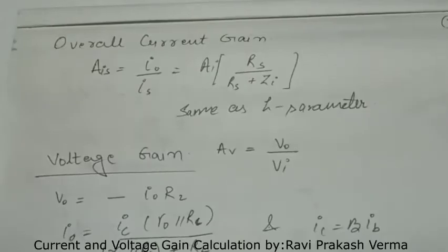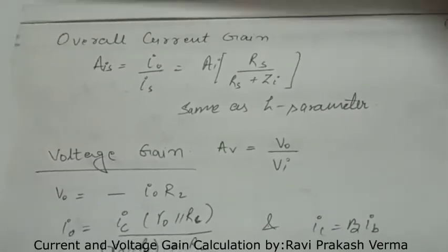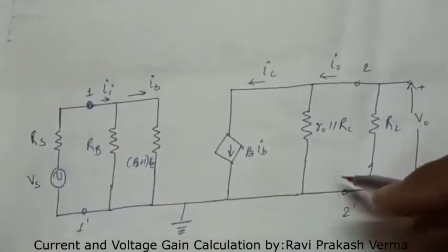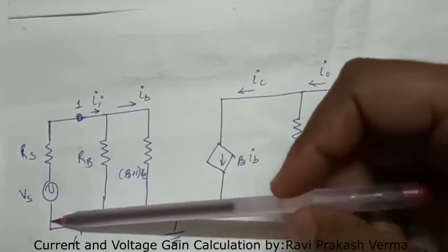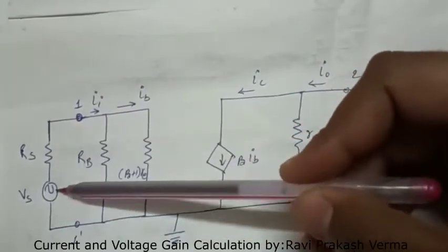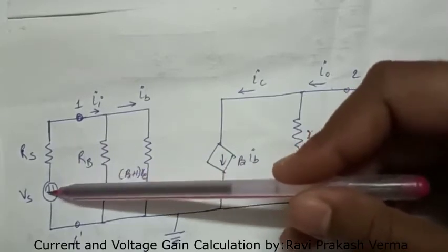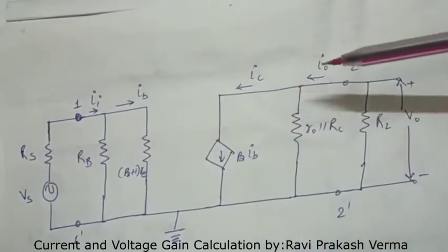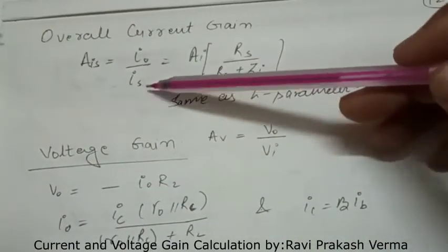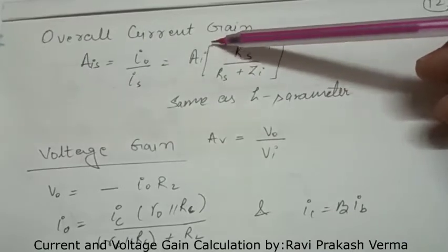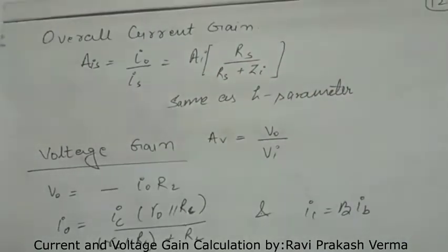There is another term called overall current gain. Overall current gain means the output current I naught upon the input current Is, which flows in the circuit due to Vs. This current gain is the same as obtained in the S parameter section, so it will be referred from that part.